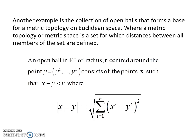Another example is the collection of open balls, which forms a base for a metric topology on Euclidean space, where a metric space is a set in which distances between all members are defined. An open ball — think of a sphere where all interior points are included except those on the surface. An open ball in n-dimensional Euclidean space of radius r centered around some point y with coordinates y1 up to yn consists of the points x such that the modulus of x minus y is less than r, where r is the radius.